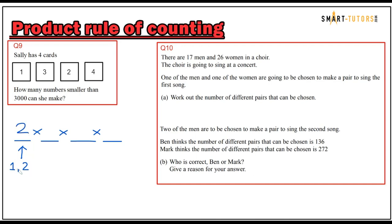After selecting the first digit from one or two, you are left with three remaining digits, giving three options for the second slot. After selecting the second digit you have two options, then one option for the last slot. Multiplying: two times three is six, times two is twelve, times one is 12 ways total.